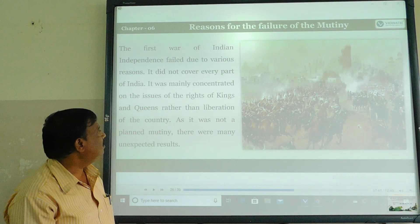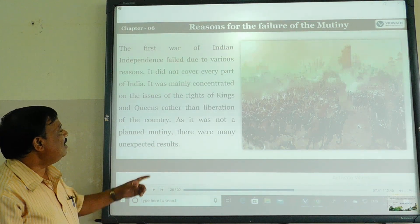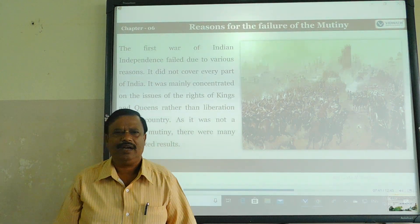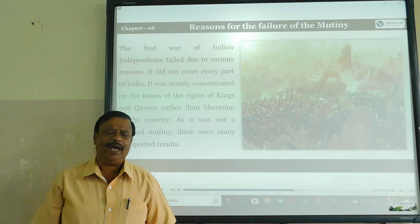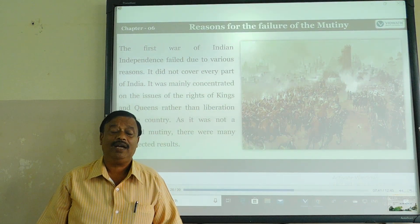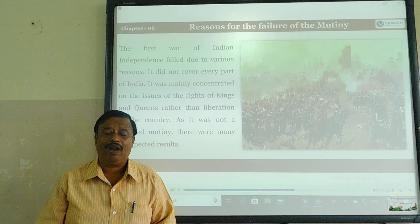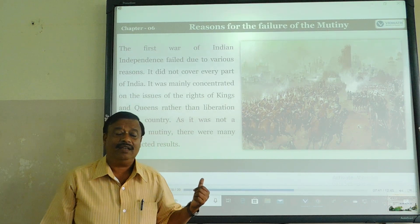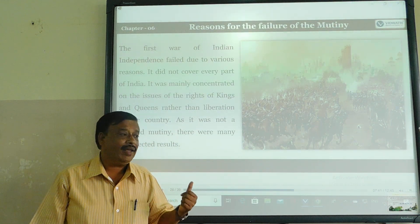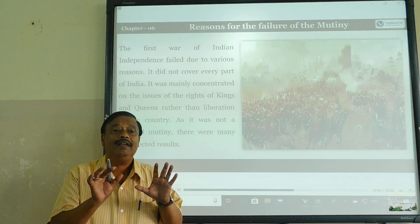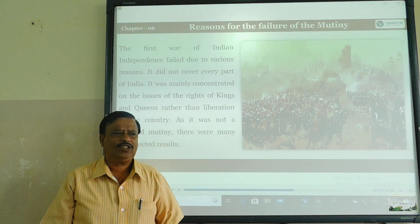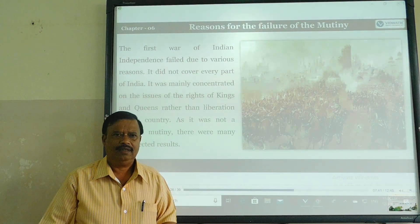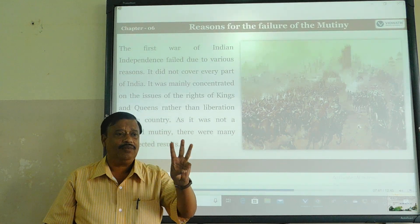Third one: it was not a planned effort. A plan is very very important — without a plan, we cannot succeed in our path or in the future. Our Indian Sepoy Mutiny, by our Indian soldiers and people, did not have a good plan. They started in whatever way they thought, but there was no plan. These three points are very very important reasons for the failure of the 1857 revolt.